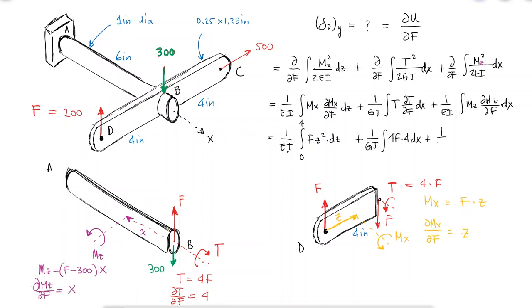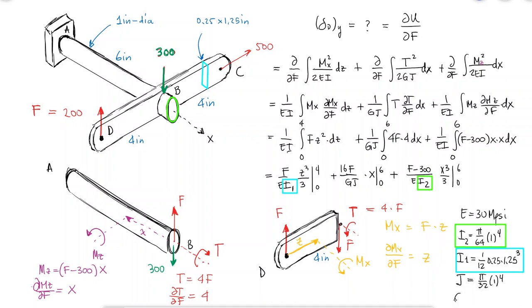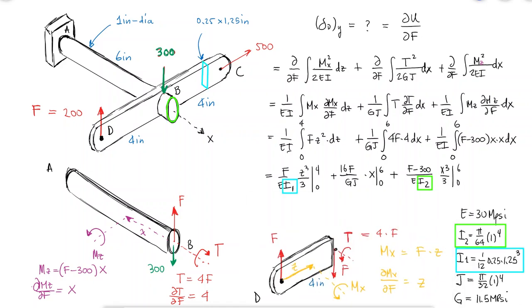Substituting these values, carrying out the integrals, and finding the values for E, I, J, and G, we find that the deflection is 0.0156 inches.